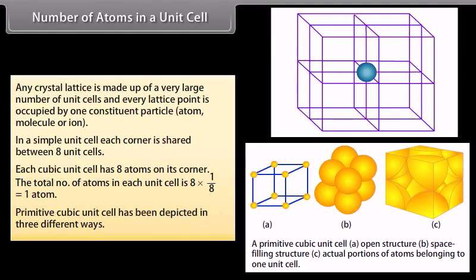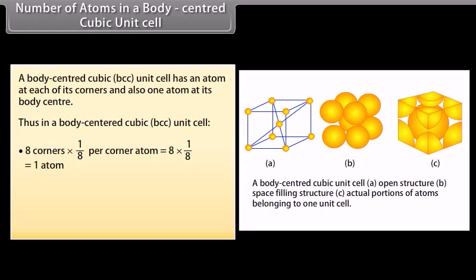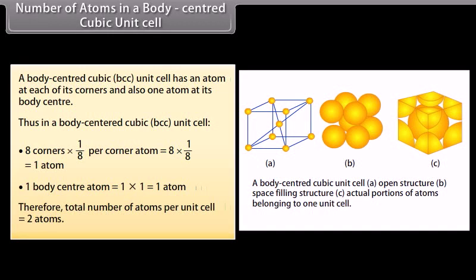The primitive cubic unit cell has been depicted in 3 different ways. In a body centred cubic (BCC) unit cell, each cell has an atom at each of its corners and also 1 atom at its body centre. Thus: 8 corners × (1/8) per corner atom = 1 atom, plus 1 body centre atom = 1 atom. Therefore, total number of atoms per unit cell = 2 atoms.